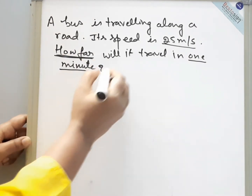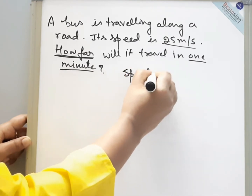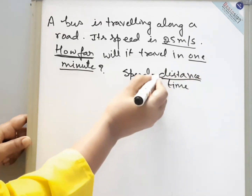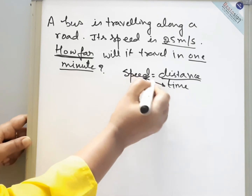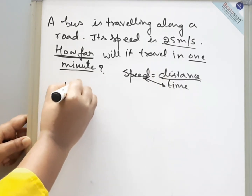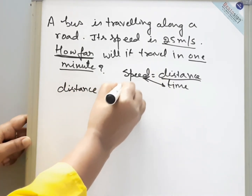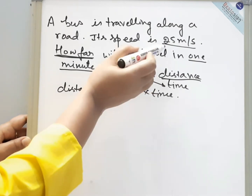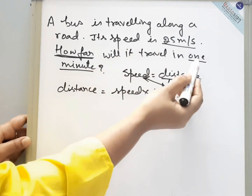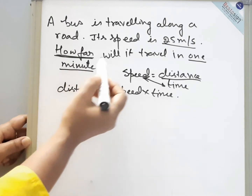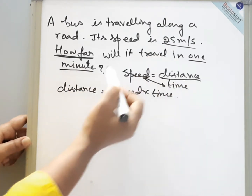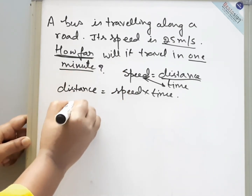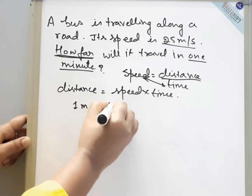So we are going to rearrange this formula. Speed is equal to distance by time. To calculate distance, we will cross-multiply. Distance will be equal to speed into time. As you can see, speed is given in meters per second and time is given in minutes, so we have to convert this minute into seconds. 1 minute is equal to 60 seconds.